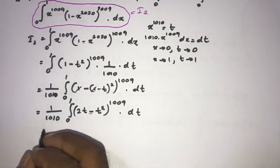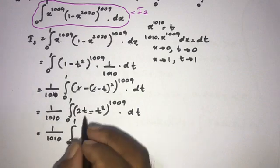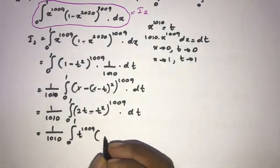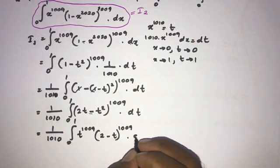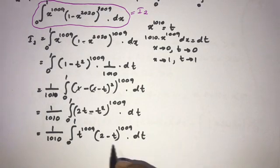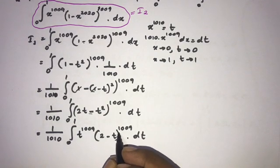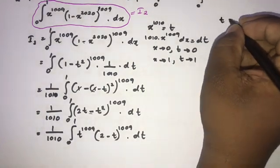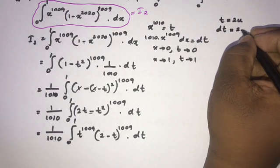Here t is a common factor, so we can write 1 over 1010 times the integral from 0 to 1 of t to the 1009 times (2 minus t) to the 1009 dt. Now we have (2 minus t), but if we convert this to the form (1 minus t) to the 1009 we can take a relationship between I1 and I2. So I will use another substitution: let t equal 2u.